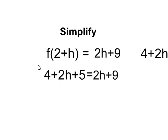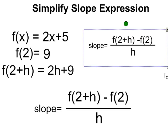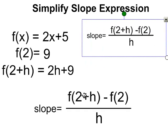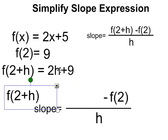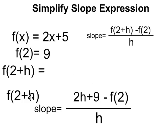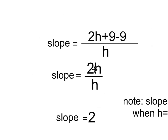Now I have my completely simplified expression for f at 2 plus h. I'm getting all ready to put it into this slope equation right here, f at 2 plus h minus f at 2 divided by h. So, here's my equation, f at 2 plus h, and I know that that is equal to 2h plus 9, and I know that f at 2 is equal to 9, so now I have my slope function here, and all I really have to do is a little bit of simplifying.